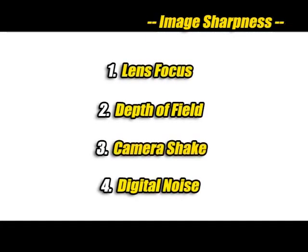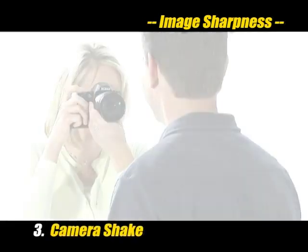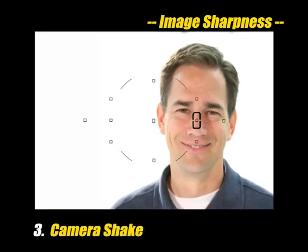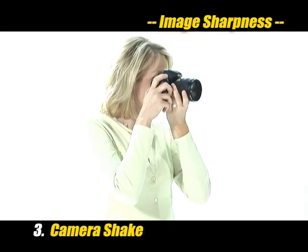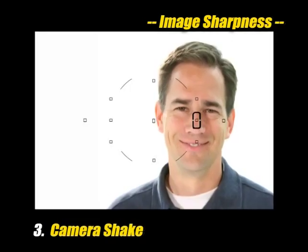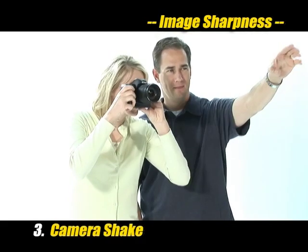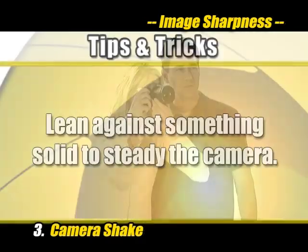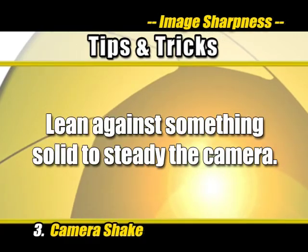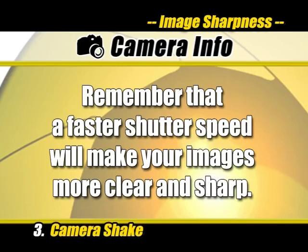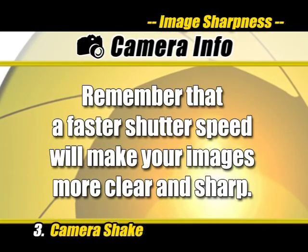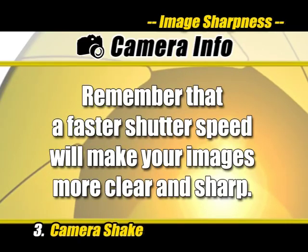Another cause of poor focus is camera shake — that is, movement of the camera while the shutter is open, exposing the image sensor. Always steady the camera when you can. Holding the camera with two hands and pressing the viewfinder gently against your face will help. Lean against something if you can, and where possible use a tripod, monopod, or even a bean bag to rest your camera on. You can also reduce camera shake by selecting a fast shutter speed, which keeps the image sensor from being exposed to shaking conditions more briefly.